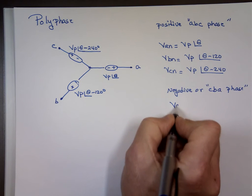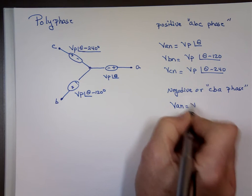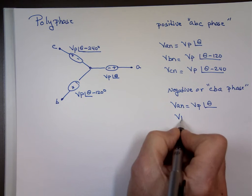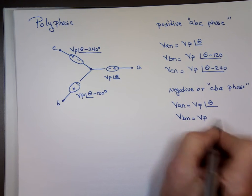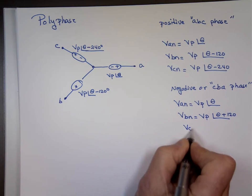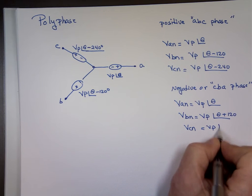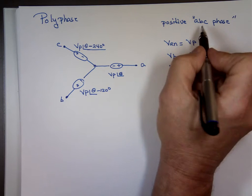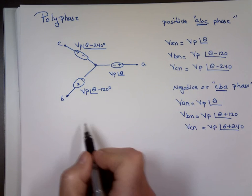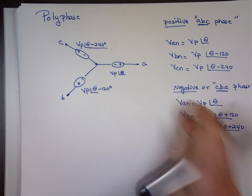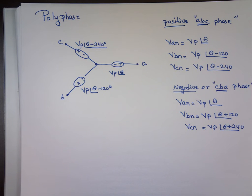For a negative or CBA sequence: if VAN equals VP at some angle theta, then VBN equals VP angle theta plus 120, and VCN equals VP angle theta plus 240. So when you're doing the homework, look for these keywords — either ABC or CBA phase sequence, or the words positive or negative. This tells you whether it's going to be negative 120 or positive 120.